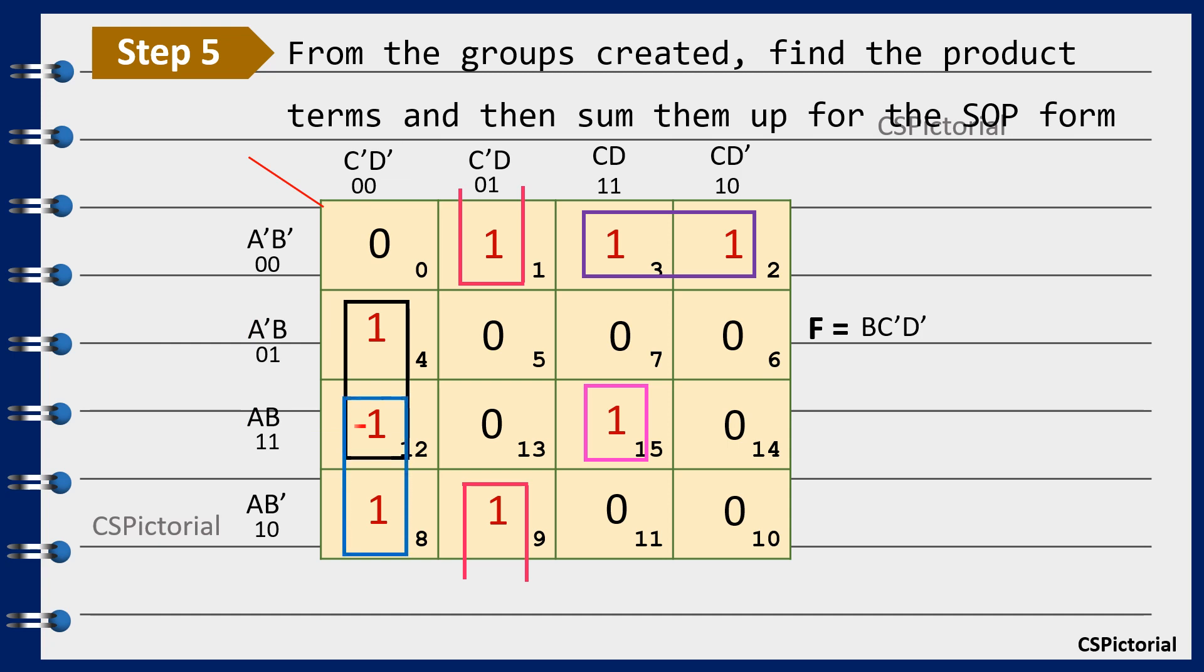Similarly the next group points to a b, a b bar and c bar d bar. Here b and b bar get cancelled making a c bar d bar get into the final expression.